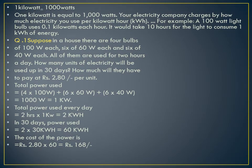Now we will see this definition: 1 kilowatt is equal to 1000 watts. Your electricity company charges by how much electricity you use per kilowatt hour (kWh). For example, a 100-watt bulb uses 0.1 kilowatt each hour; it would take 10 hours for the light to consume 1 kilowatt of energy.